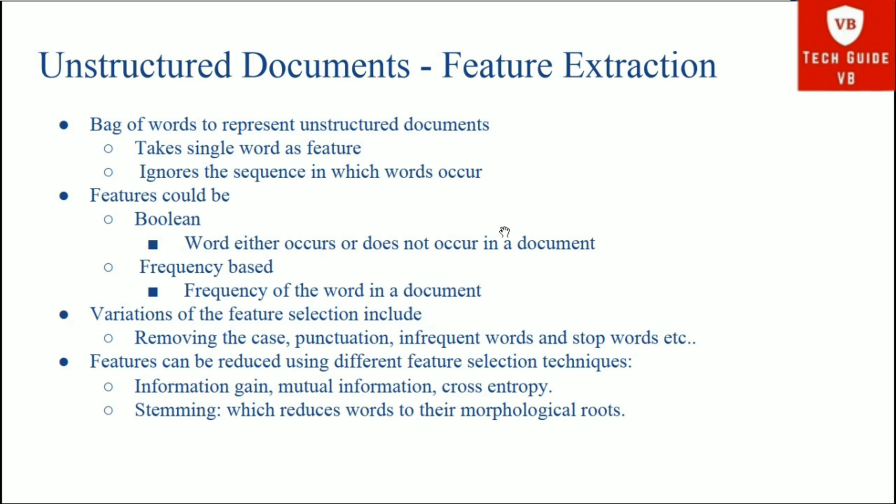Variations of feature selection include removing case sensitivity, punctuation, infrequent words, and stop words. Features can be reduced using different feature selection techniques such as information gain, mutual information, and cross entropy. Stemming is another technique, which reduces words to their morphological roots. These are the feature selection techniques used in unstructured document feature extraction.